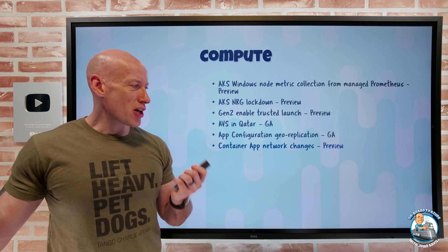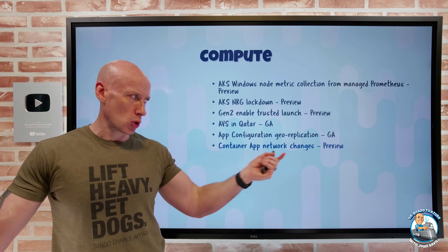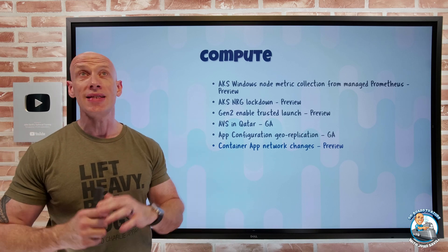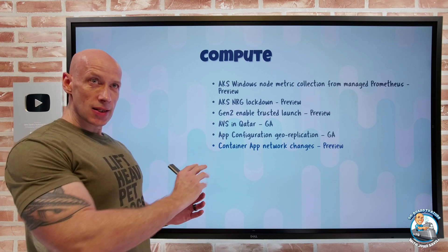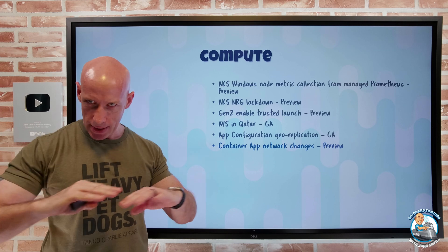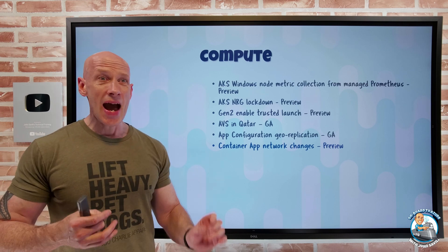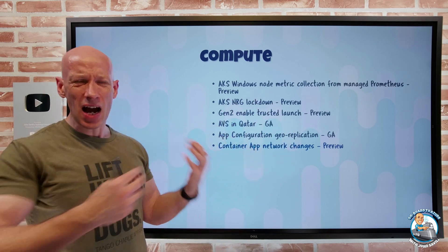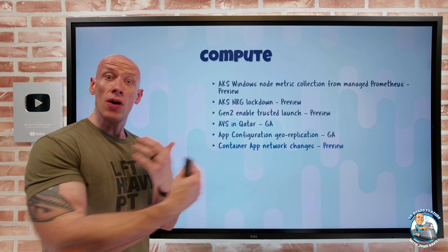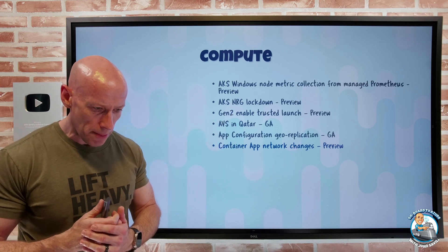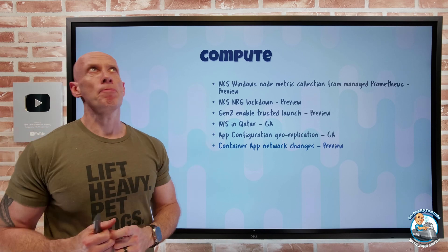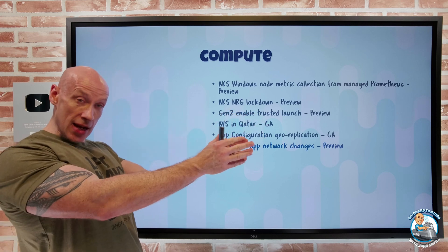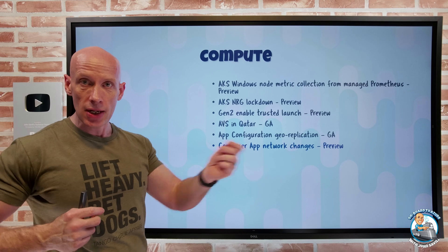Azure Container Apps have got some network changes in preview, tied to a new plan type. Container Apps are useful for container-based microservices, abstracting the complexity of AKS while still running underneath, adding KEDA for scaling, Dapr for microservices capabilities, service discovery, and easy blue-green deployments. The new network changes let you apply a user-defined route, so you can direct outbound traffic to a firewall or virtual appliance — something you couldn't do before. Also, the minimum subnet size is now a slash 27, much smaller than previously.